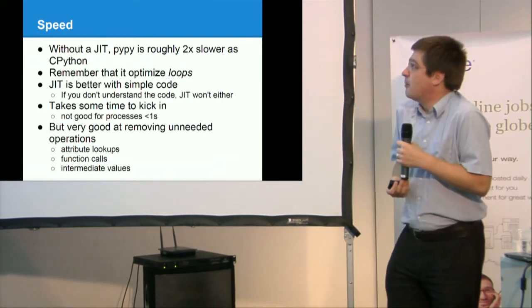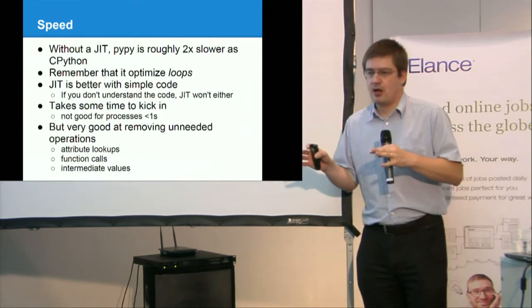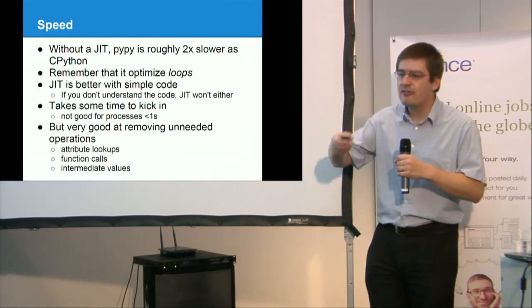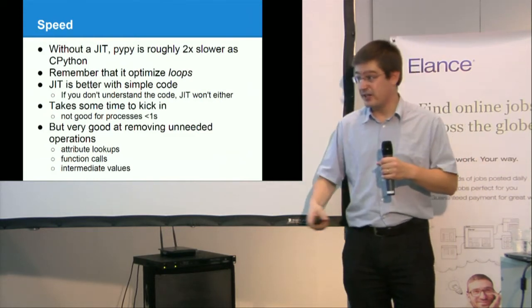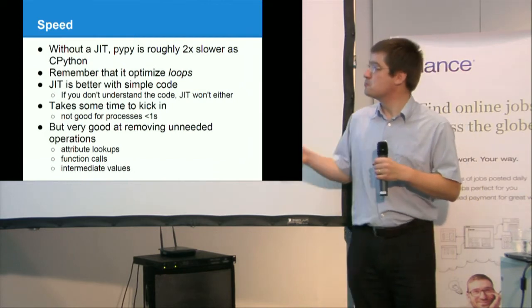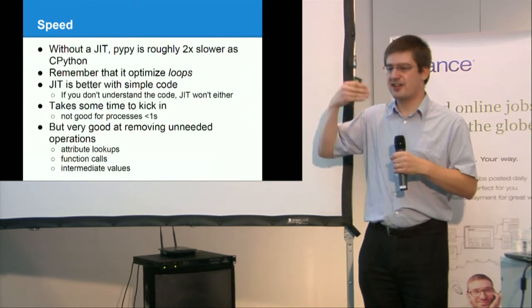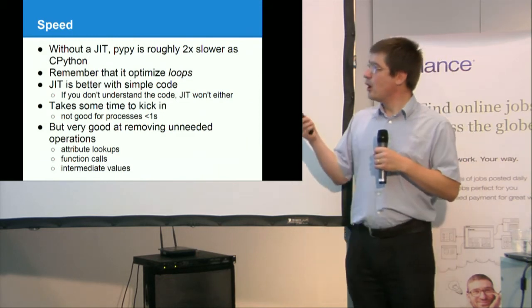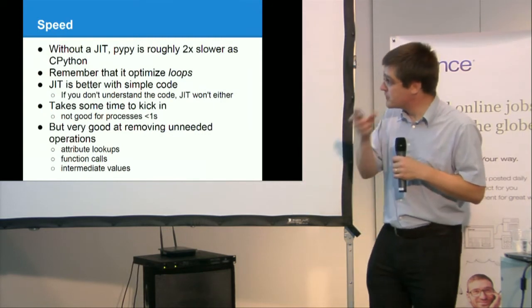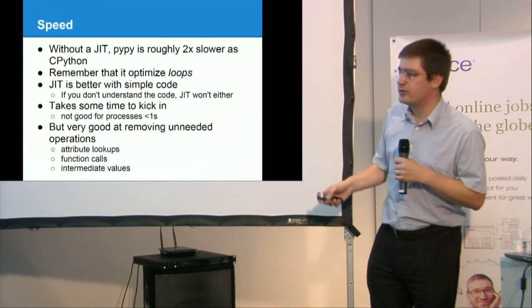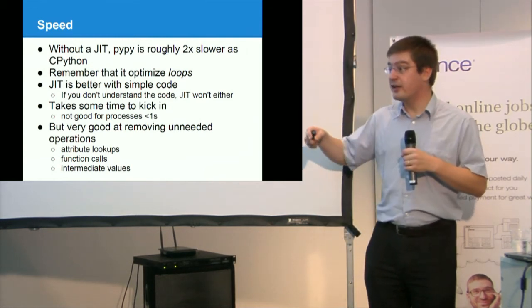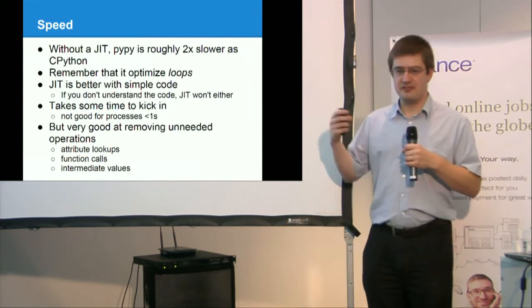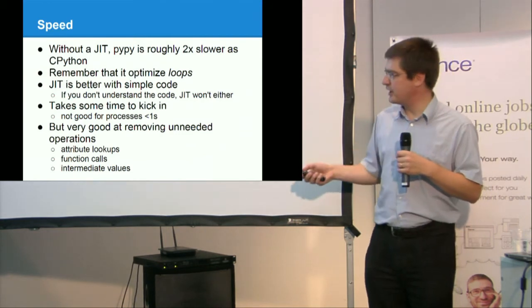But without just-in-time, PyPy is roughly twice slower as CPython. Why? Because PyPy is written with generated code. This generated C code is not as optimized as CPython, which has been carefully optimized with really good C code and a lot of work to make it a bit faster here and there. So with PyPy, a standard C code generator, it's twice slower. Also remember that the just-in-time optimizes loops, only loops. And it takes some time to start. PyPy is a bit slower, and it only starts the just-in-time after 1,000 loops. So if your program is a simple Python script, such runs in half a second, it will likely not be sped up by PyPy.